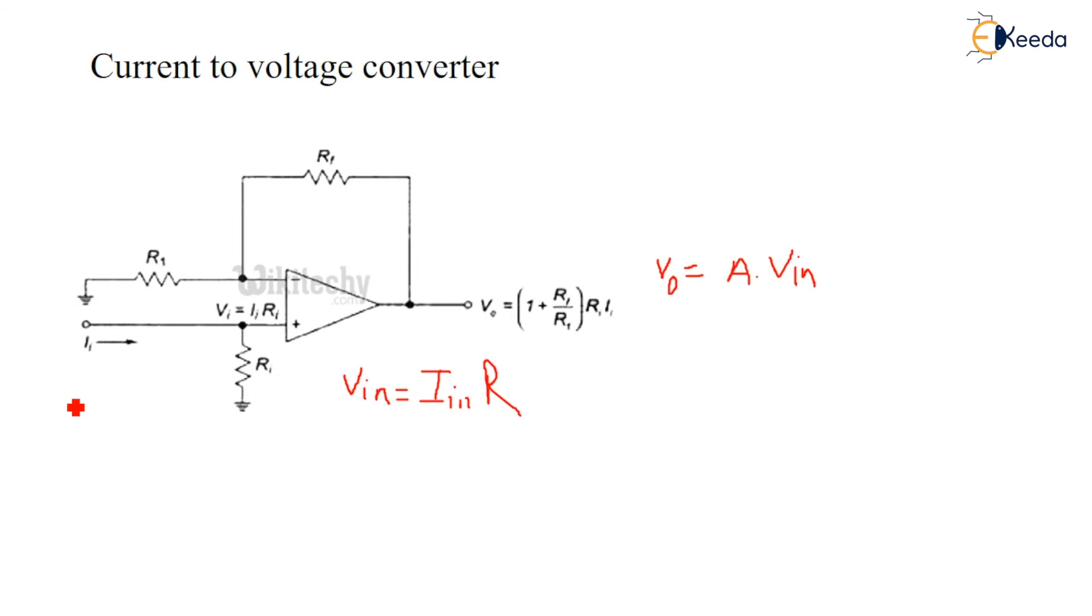There is one application where you can use photovoltaic cell over here. In photovoltaic cell also we can measure this light intensity in the form of current and that will convert it into voltage. So this application we can use in measurement instruments.